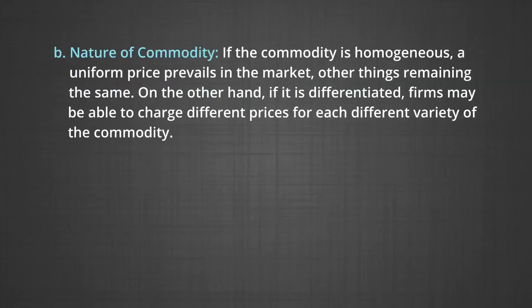Number two, nature of the commodity. If the commodity is homogenous, a uniform price prevails in the market, other things remaining the same. On the other hand, if the commodity is differentiated, firms may be able to charge different prices for each different variety of the commodity.